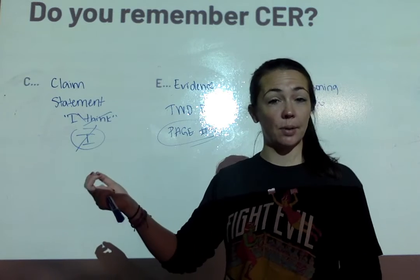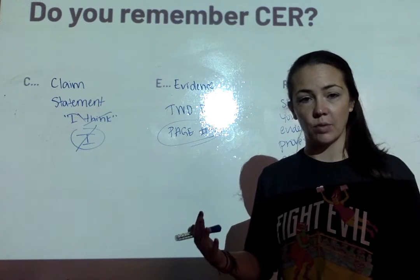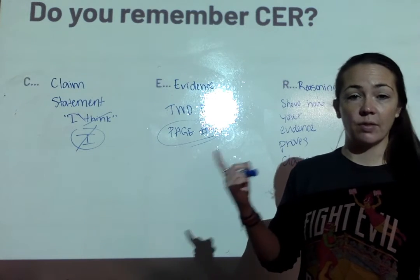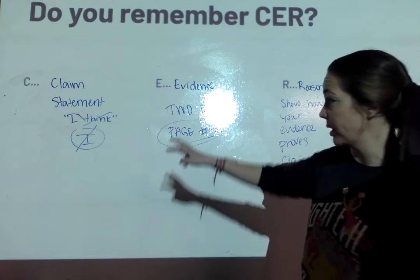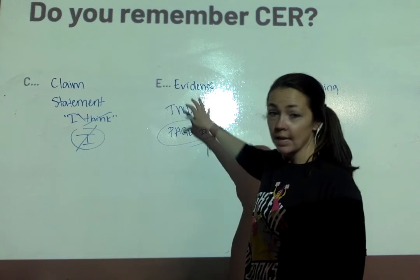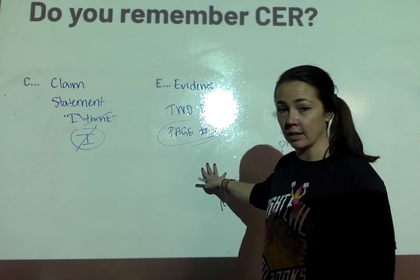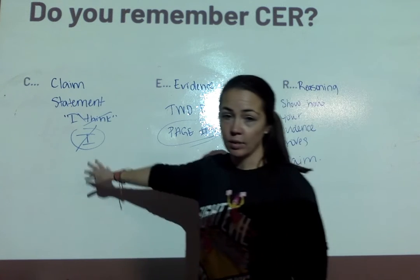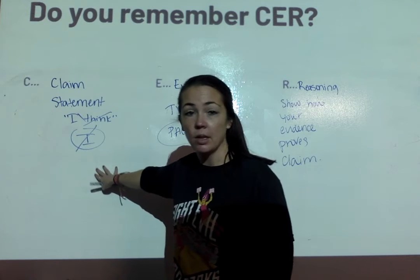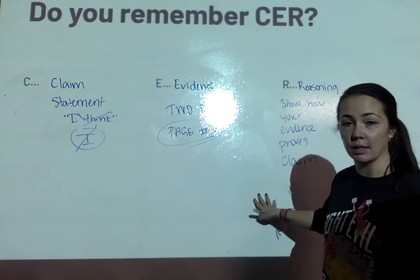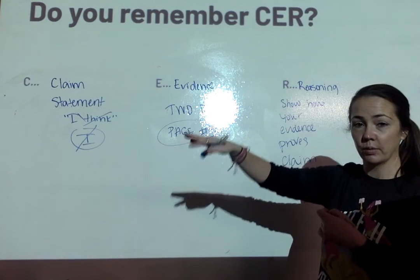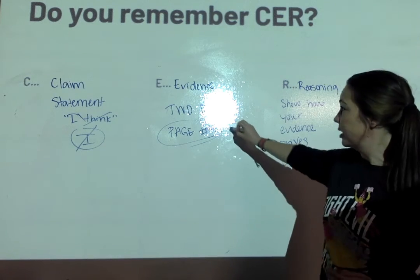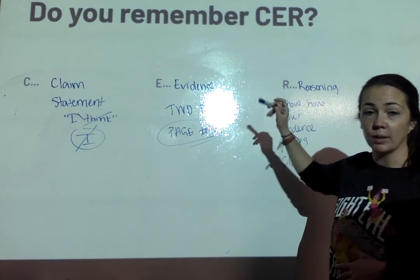Reasoning is where you show me how that evidence proves the claim. It might feel a little repetitive. You could say, 'Since The Office is funny, and human beings like things that are funny, and since The Office makes audiences feel things, it is clear that The Office is the best TV show of all time.' You could say something simpler like 'For all these reasons, The Office is the best TV show of all time' — that's okay, it's not great. But you might just want to restate: 'Since The Office is both funny and emotional' — because those were the evidence points — 'clearly, The Office is the best TV show of all time.' Think of it like a sandwich: make a claim, prove the claim, then tell me how you just proved the claim. Use your words — explain. Don't just throw random quotes in there.